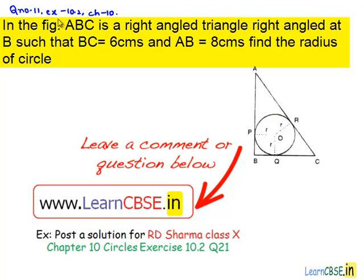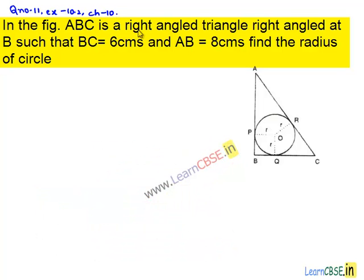Now, let us solve question number 11 from exercise 10.2, chapter 10. In the figure, ABC is a right angle triangle, right angled at B such that BC is equal to 6 cm and AB is equal to 8 cm. Find the radius of the circle.